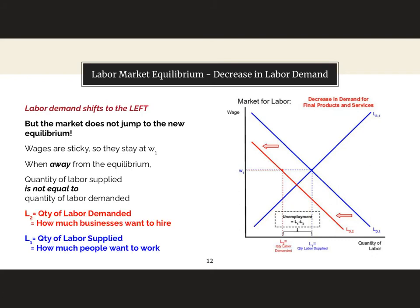The difference between l2 and l1 is the level of unemployment. The quantity of labor demanded is how much businesses want to hire. That is lower than l1, the quantity of labor supplied, which is how much people want to work. So that difference will be people that want a job that will not get one.